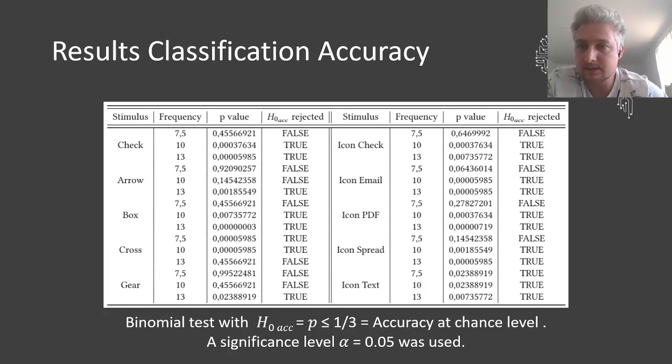We evaluated the significance of the results with the binomial test, with the null hypothesis being accuracy at chance level, so we just wanted to see if those balanced classification accuracies are significantly above chance level. The significance level of 0.05 was used.